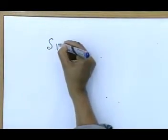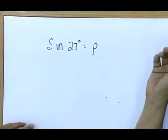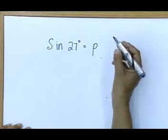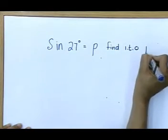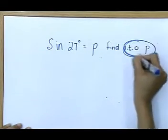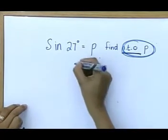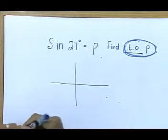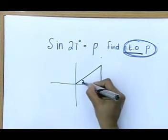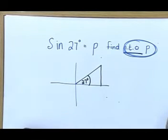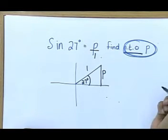The second type of sketch is if they say the sin of 27 degrees is equal to P — grade 11s, you also do this in trigonometry. You immediately know you have to get a sketch, because they're going to say find in terms of P. This is your key word: find in terms of P. Then you know you have to draw a sketch. Where is the sketch going to go? In the first quadrant. Why? Because 27 degrees is an acute angle. P over 1 — opposite over hypotenuse.